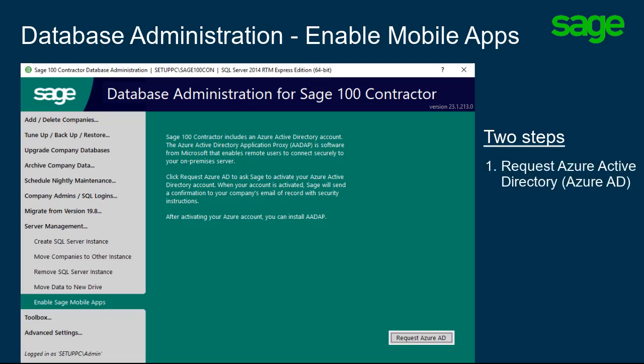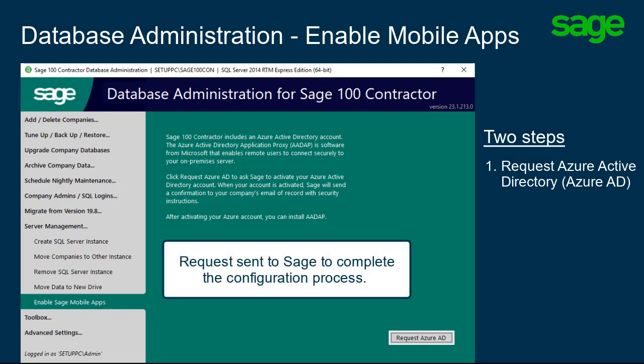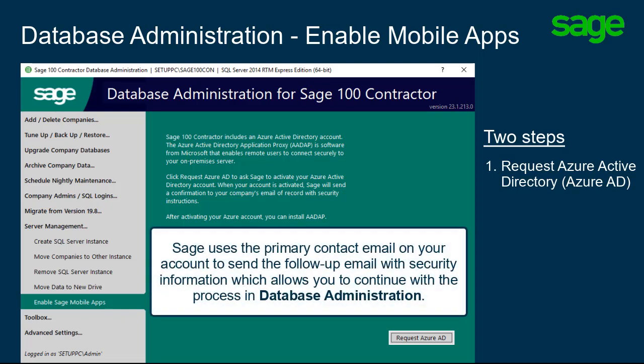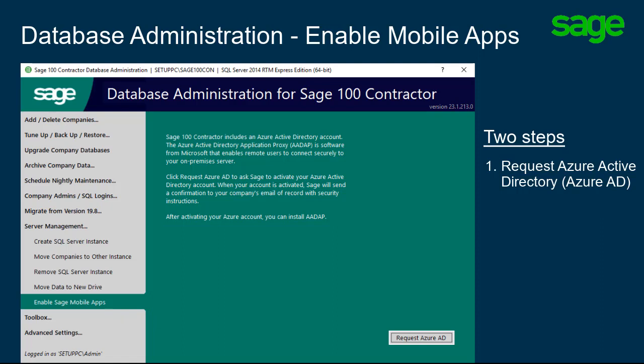The first step is to request the Azure Active Directory, or Azure AD. This sends a request to a group at Sage that completes the configuration process. After the setup is complete, Sage uses the email for the primary contact on your account and replies with an email that includes security information you need to continue with the setup in Database Administration. This email should arrive within minutes of the request.